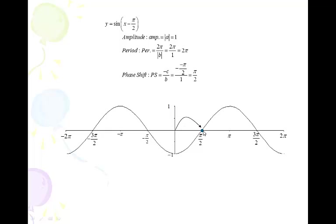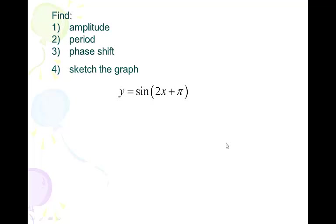We start at that shifted point and go to the right, going up, then down, then down — moving in quarter period increments. This ends up looking like the negative cosine curve, and it really is. Once I have that anchor point, I know what I'm doing. Had there been a negative in front of the sine, instead of going up from that point I would have gone down.